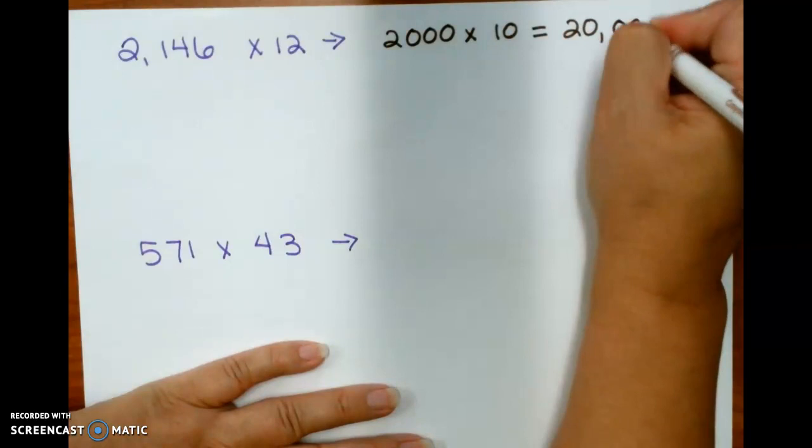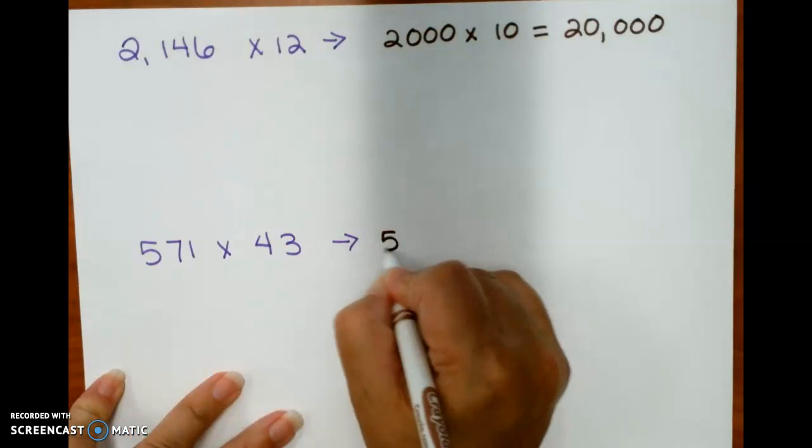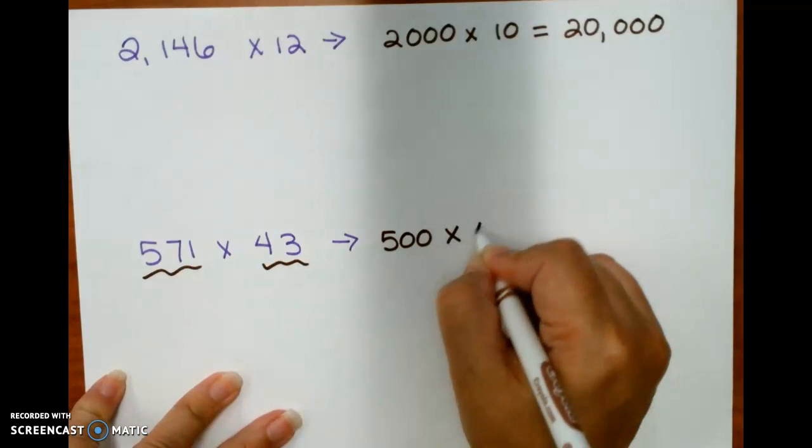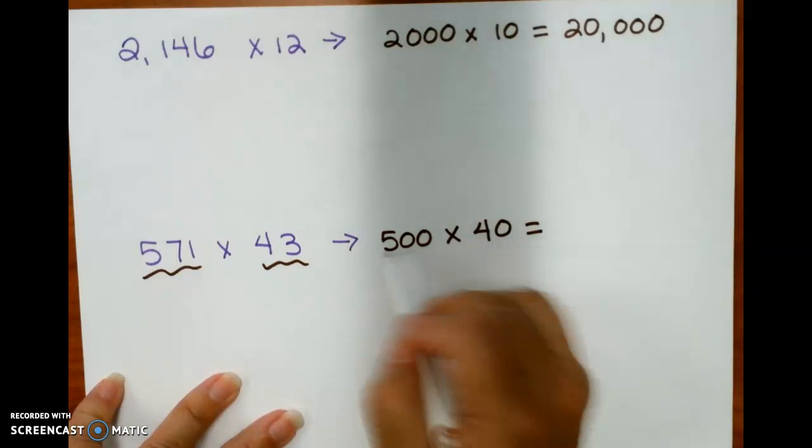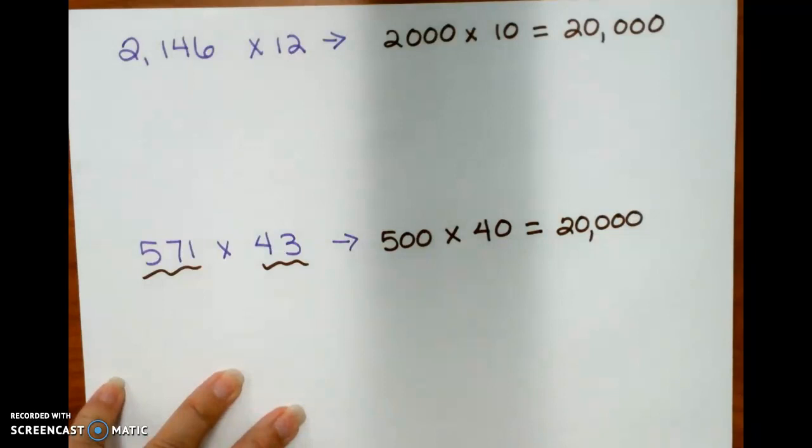Now, 571 times 43, I'm going to round that to 500 and the 43 to 40. That makes it really easy to multiply. 5 times 4 is 20, and 100 times 10 is thousands. So I have 20,000.